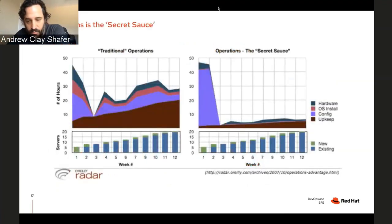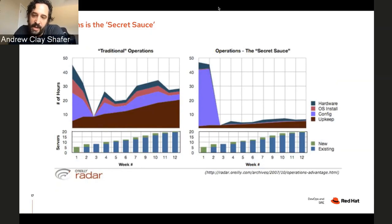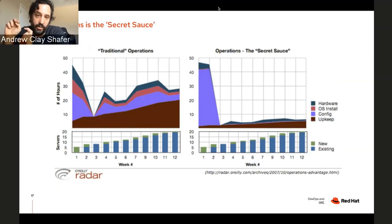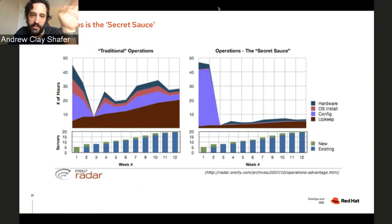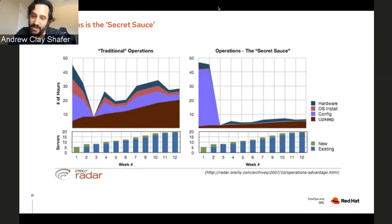Here's a slide from 2007 I use in a lot of presentations, made by a friend who worked at Amazon at the time — this is the golden age of Puppet coming into the beginning of DevOps conversations. You have traditional operations on one side and the new 'secret sauce' operations on the other. The colors represent human toil — hours of work to maintain a system — and the X-axis represents scale, adding servers. Those numbers seem laughable now, but at the time twenty servers seemed like a big deal.